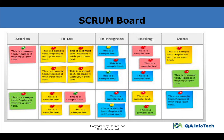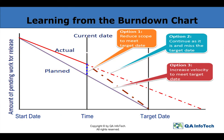A basic Scrum board contains a column of user stories — the list of user stories committed for the particular sprint. 'In Progress' refers to the user stories picked up by the development team for development. 'Testing' refers to the user stories picked up by the QA team for testing. 'Done' is the column that contains all user stories which are completed and ready for release. The burn down chart is used as a tool to guide the development team to successful completion of a sprint on time.